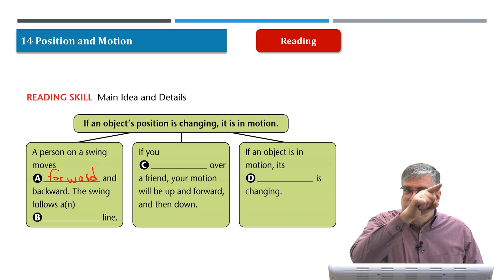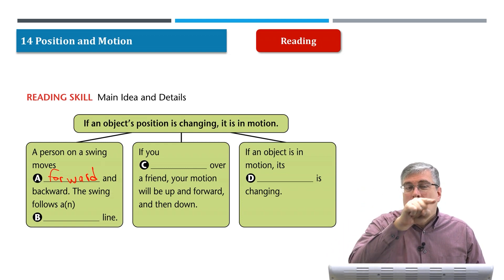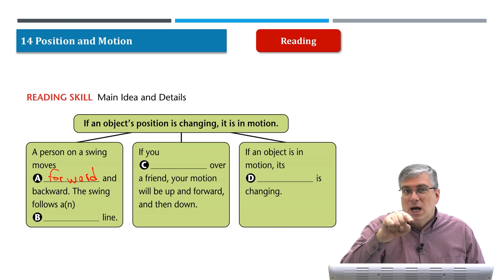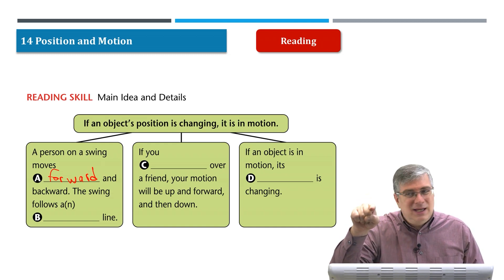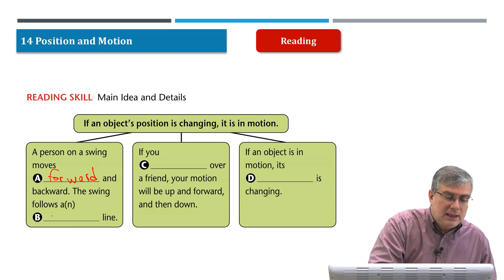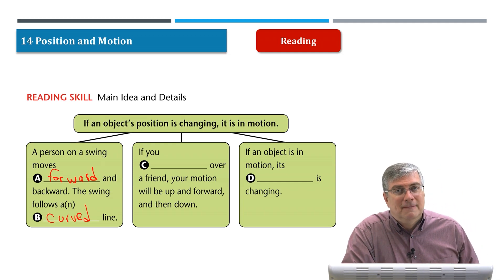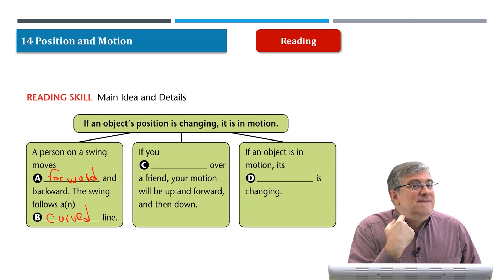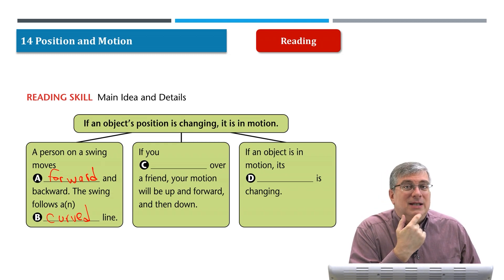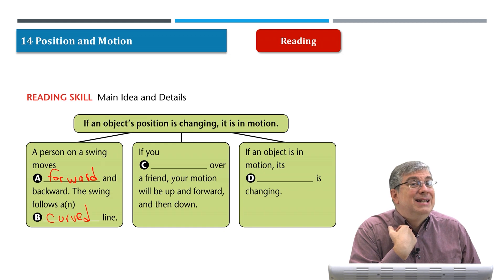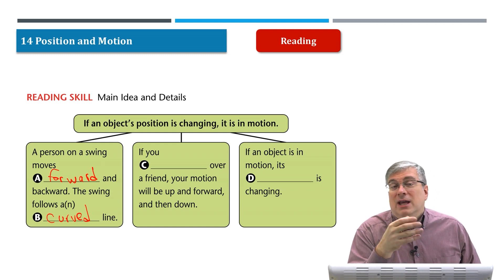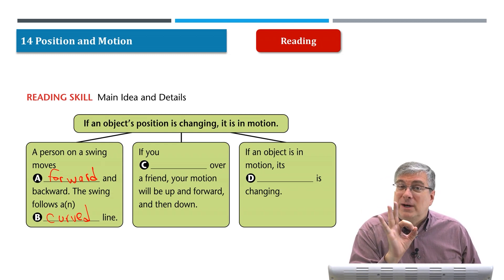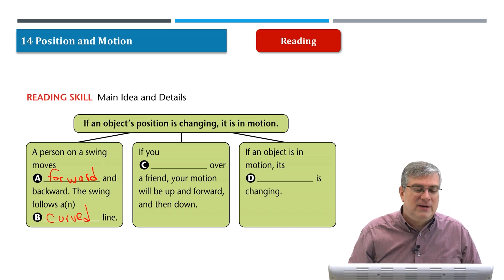The swing follows a curved line — not a straight line, but a curved line. Curved is a little difficult to pronounce: when you make the V sound, your teeth are on your bottom lip, and for the D in curved, your tongue touches the roof of your mouth quickly. Curved. If you practice these positions, you will pronounce it perfectly. So the swing moves in a curved line.